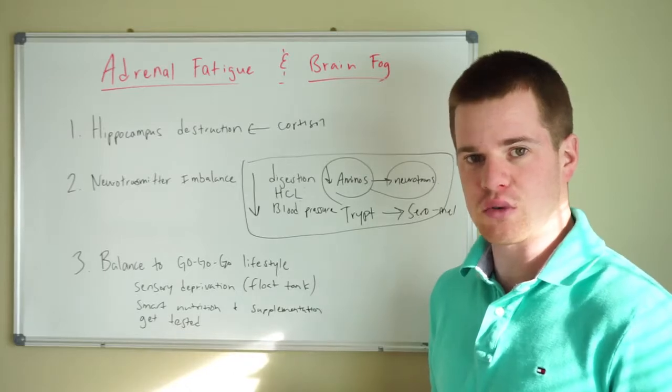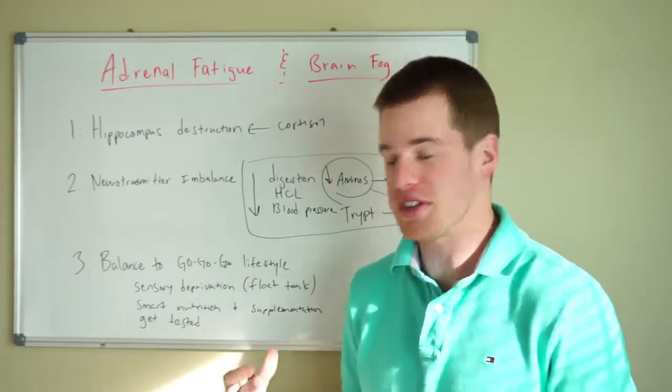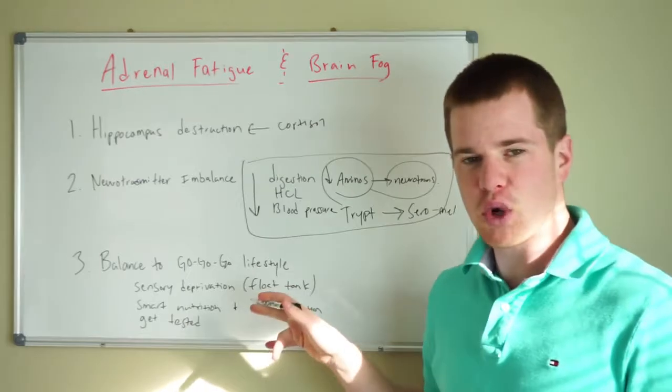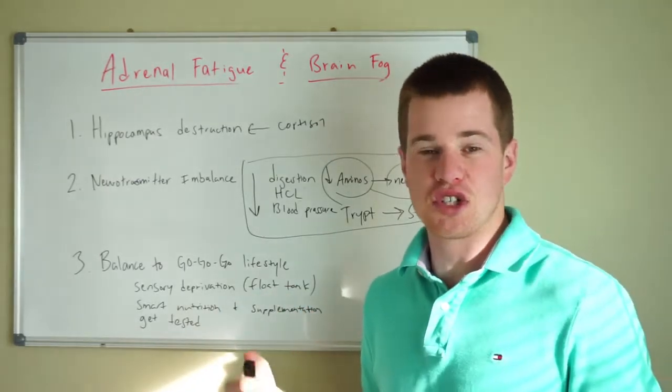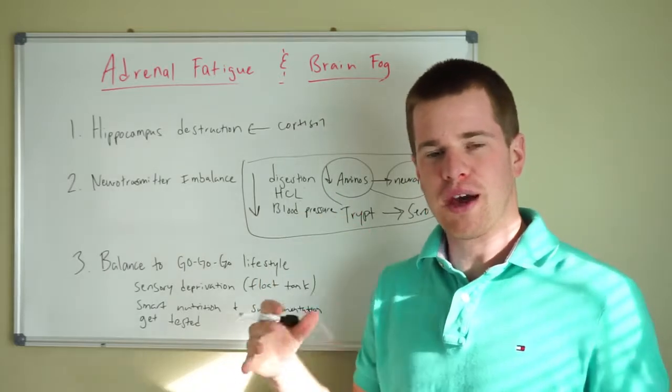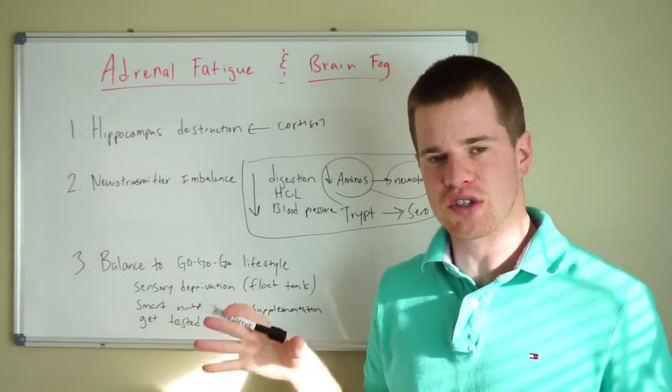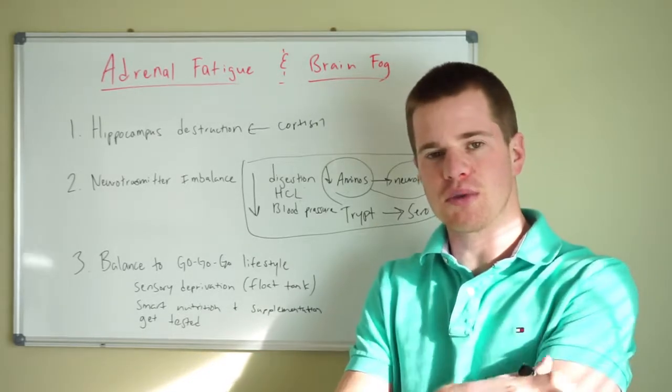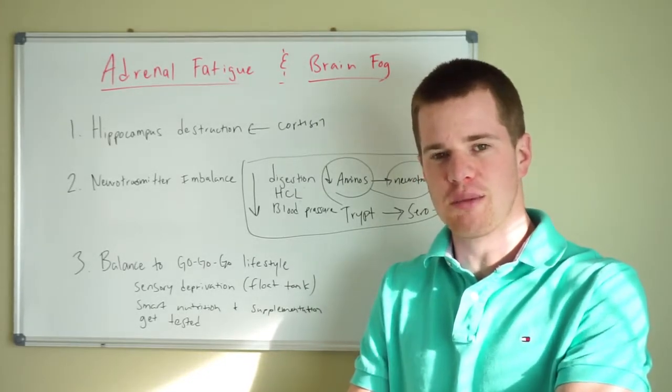Here are a couple of strategies that I like to use with some of my clients and what I use personally. Number one is going to be sensory deprivation, also known as float tanks. Essentially these are giant bathtubs, about 10 inches of water with about a thousand pounds of Epsom salt dissolved into them, magnesium sulfate.